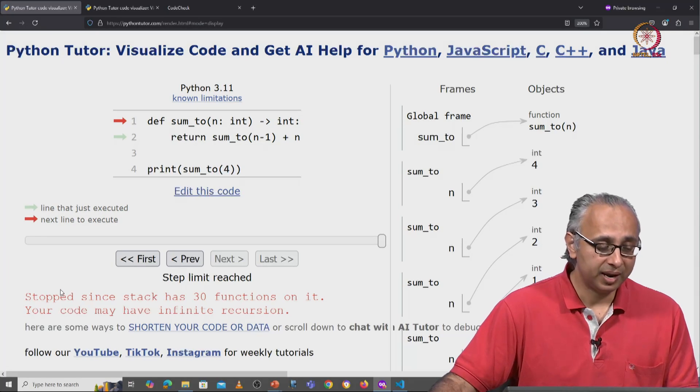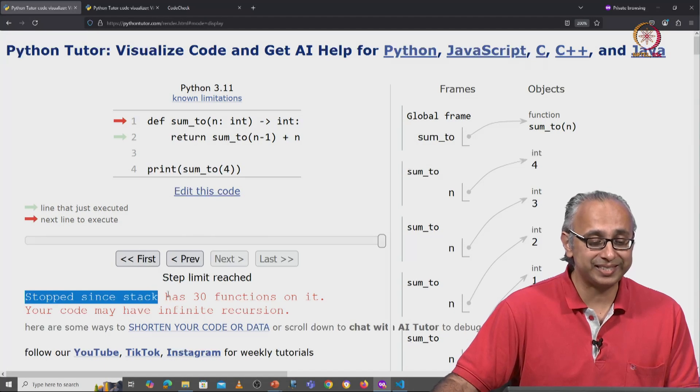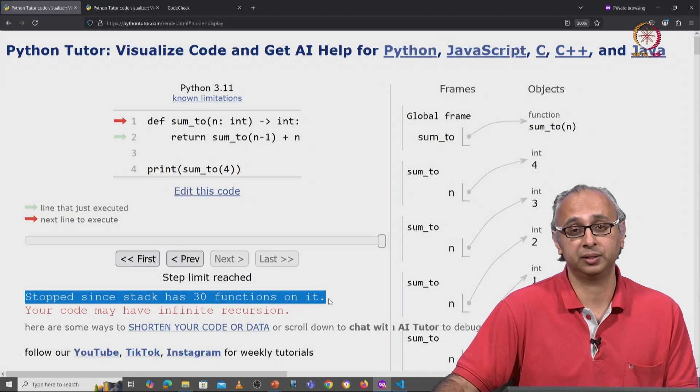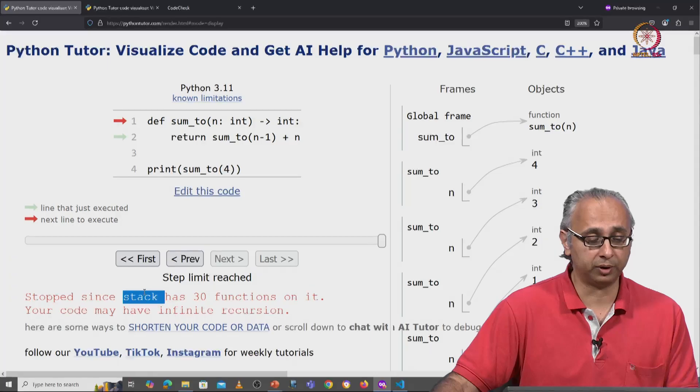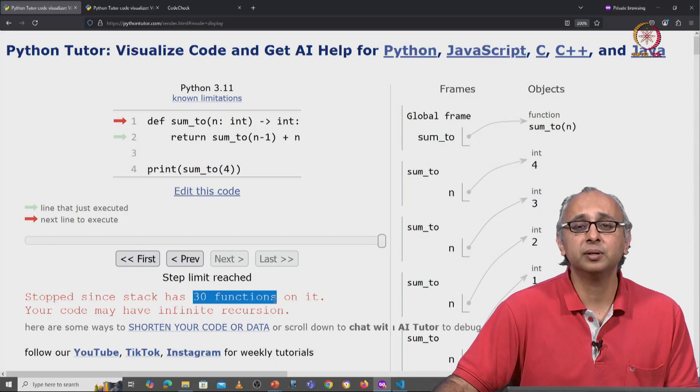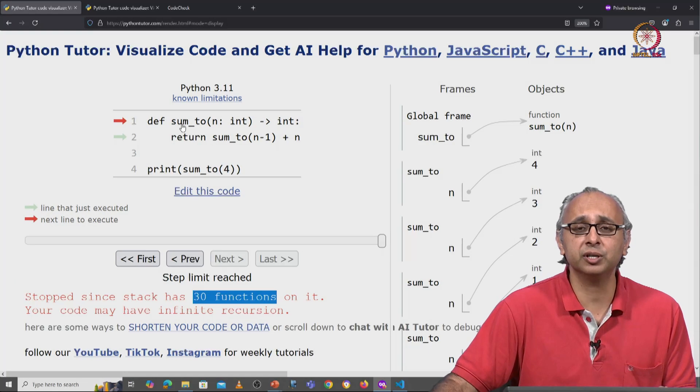I get an error message. It says stop since stack has 30 functions on it. Now I don't yet know what a stack is, but 30 functions? How on earth can there be 30 functions? There's only one function.